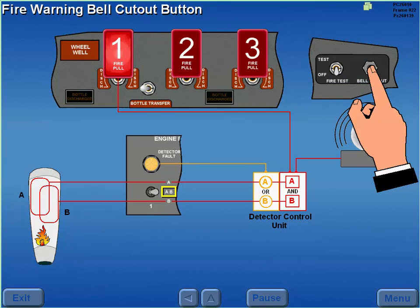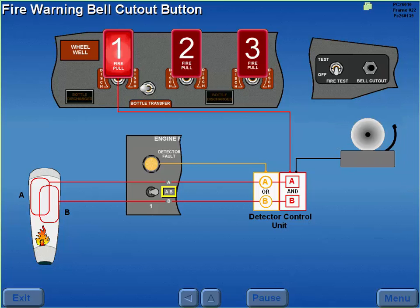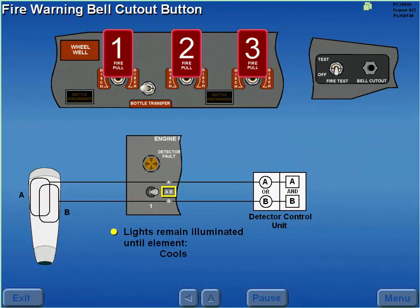The fire warning bell is silenced by pressing the fire warning bell cutout button. However, the fire handle and detector fault lights remain illuminated until the sensing element cools or is destroyed by fire.